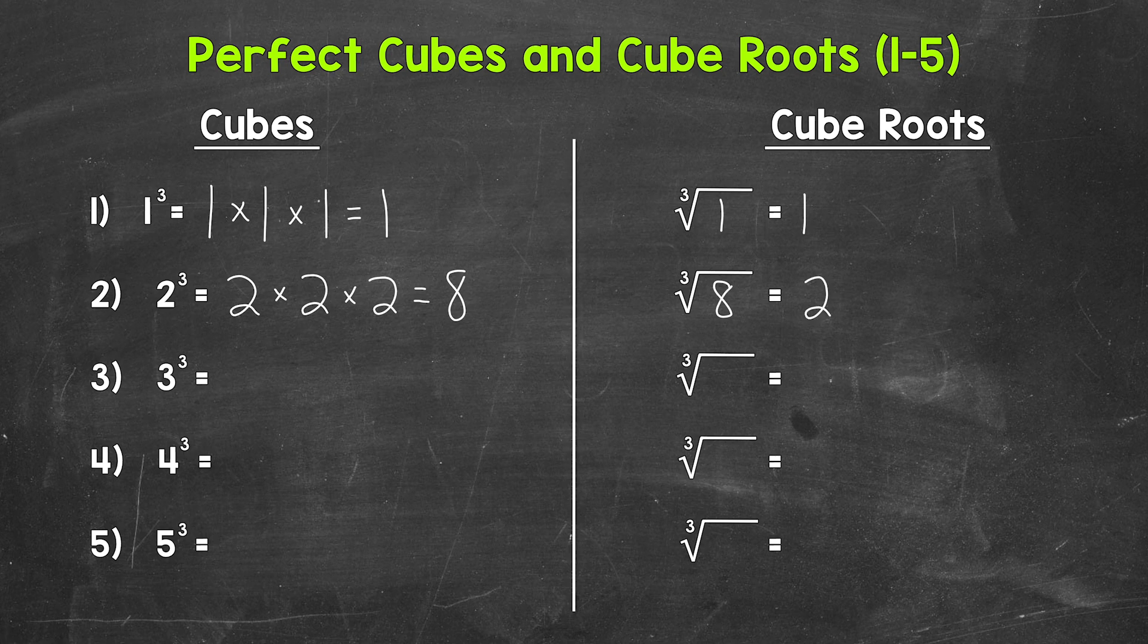Let's move on to number three where we have three cubed. That means three times three times three. Three times three is nine times three is twenty-seven. Three cubed equals twenty-seven.